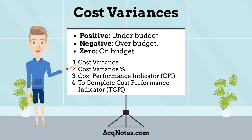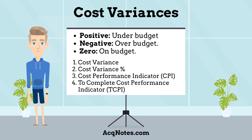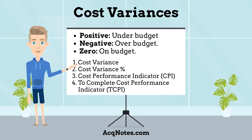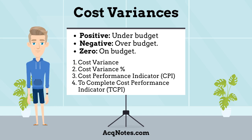There are three cost variance outcomes in earned value management. A positive result means a project is under budget. A negative result means a project is over budget. And a zero result means a project is on budget.